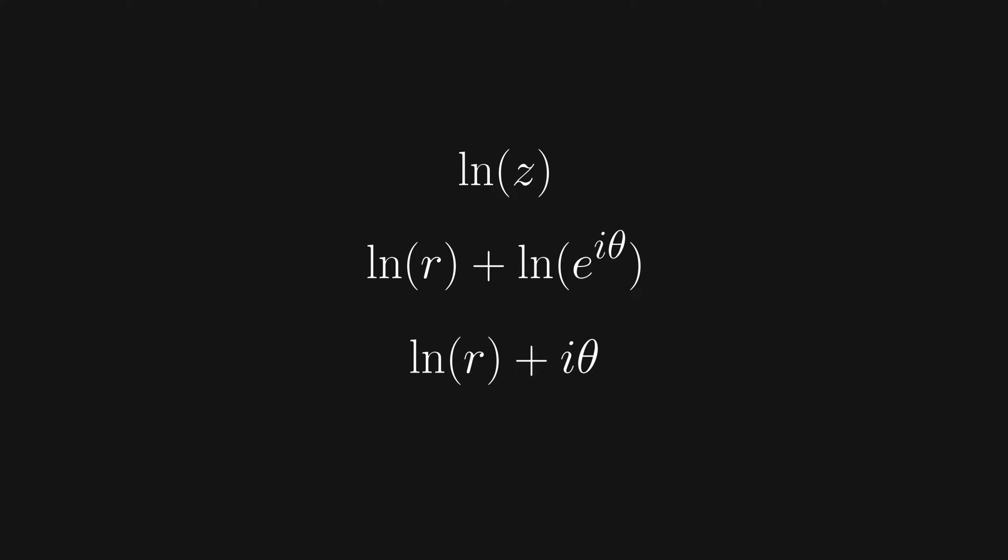Hopefully you'll be able to see that since r is a positive real number, natural log of r will also be real, and since theta is a real number, i theta is strictly imaginary. So now we've broken natural log of z into its real and imaginary components. One interesting thing of note is that by taking the logarithm of a complex number, its real part is only dependent on its length, and its imaginary part is only dependent on its angle.